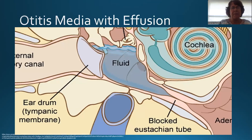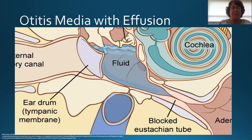How does fluid get into the middle ear? It starts with an infection — bacteria, a virus, or both. When there's an invader or infection of your sinuses, or when you have a cold, your nose produces mucus and watery discharge to flush out that pathogen. The same thing happens in the middle ear: it produces fluid to wash away pathogens. The germs are supposed to get washed out through the eustachian tube. If that tube is swollen or not working properly, the fluid gets stuck in the middle ear space.